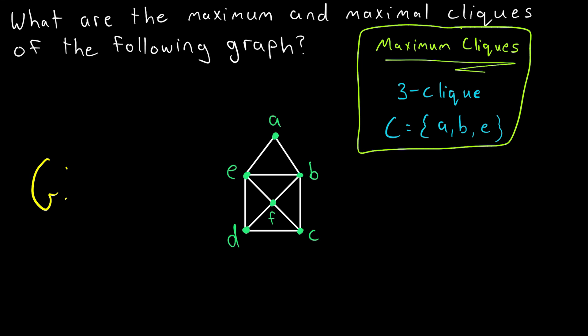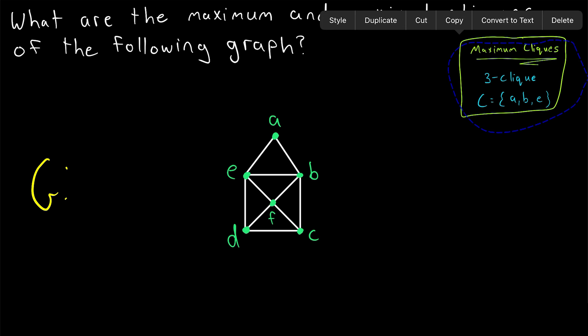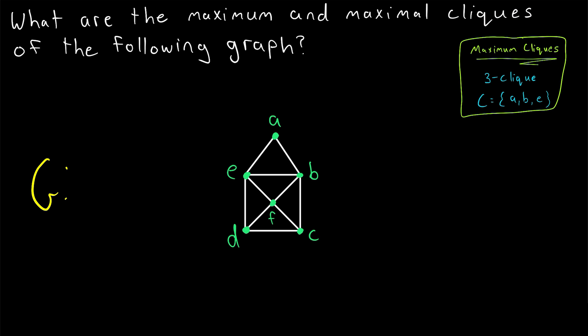In order to find the maximal cliques in this graph, let's instead point out all of the non-maximal cliques, and then every other clique will be maximal by definition. Also, notice that by definition every maximum clique is also a maximal clique. Because if it were not, it could be extended to a bigger clique, and thus it wouldn't be maximum. So all of our maximum cliques are also maximal.